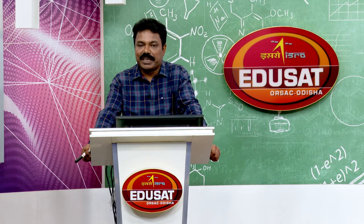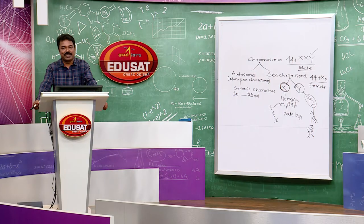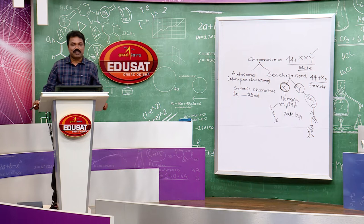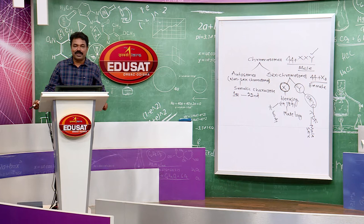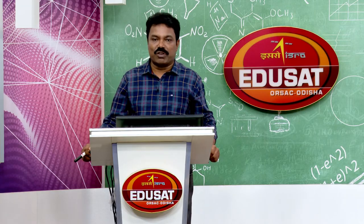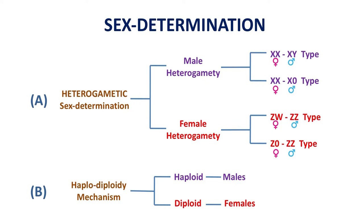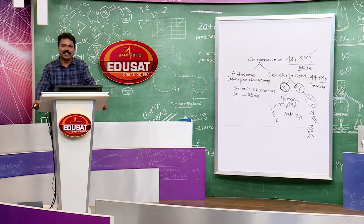First, the XX/XY mechanism. In this mechanism the female carries two X chromosomes, so she produces only one type of ovum each carrying one X chromosome. But the male carries one X and one Y chromosome, so he produces two dissimilar types of sperms — 50% carry X chromosome and 50% carry Y chromosome. If the egg is fertilized by an X-carrying sperm, the offspring will be female; if by a Y-carrying sperm, the offspring will be male.